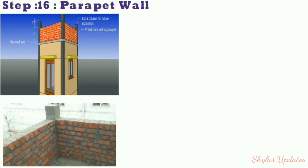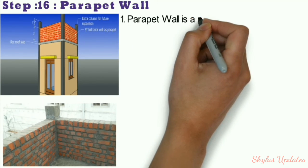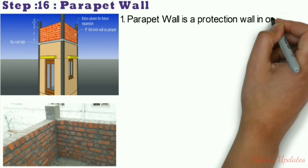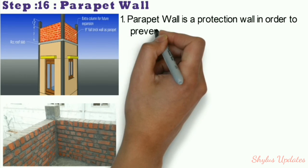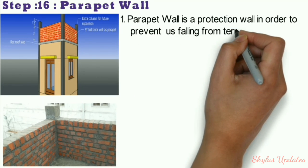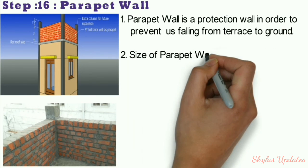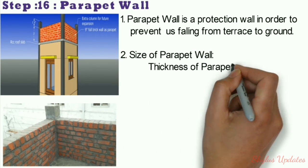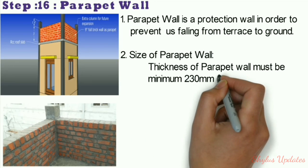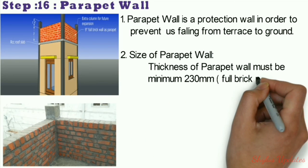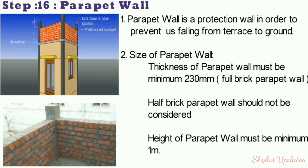Step 16: Parapet wall. A parapet wall is a protection wall to prevent people from falling from the terrace to the ground. The thickness of the parapet wall must be a minimum 230 mm (full brick parapet wall) — half brick parapet wall should not be used. Height of parapet wall must be a minimum of 1 meter.